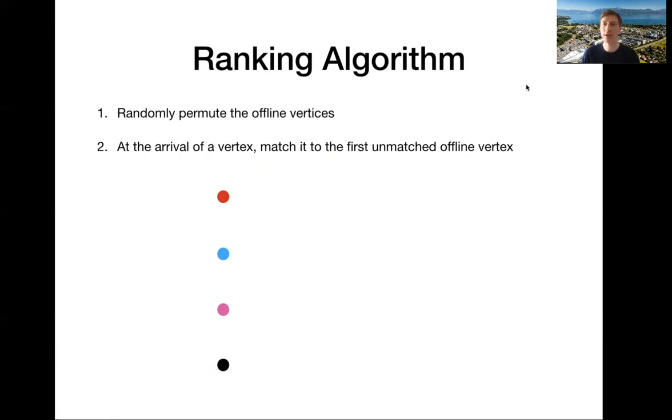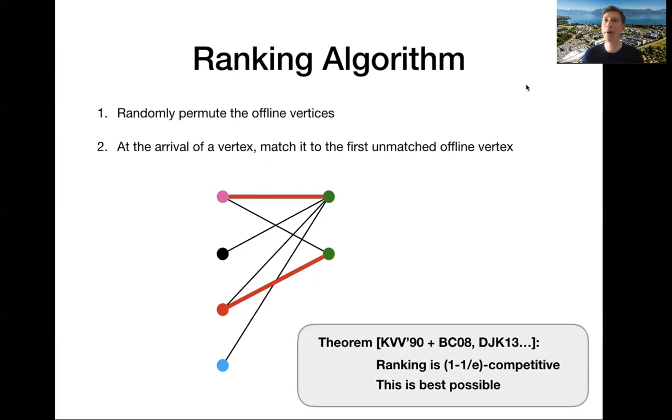And the twist is as follows. Before we start doing anything, we select a random permutation of the offline vertices. Then when a vertex arrives, we match it to the first free neighbor according to this permutation. So here it will be the purple. Now the next guy comes, he tries with the first free neighbor, which is the purple, but it's already taken. So he goes to his next neighbor, which is the red, which is free and so on. And if we do this first randomized step, the competitive ratio now becomes one minus one over e, which is strictly better than one half. And furthermore, this is known to be the best possible competitive ratio that even a randomized strategy can achieve.